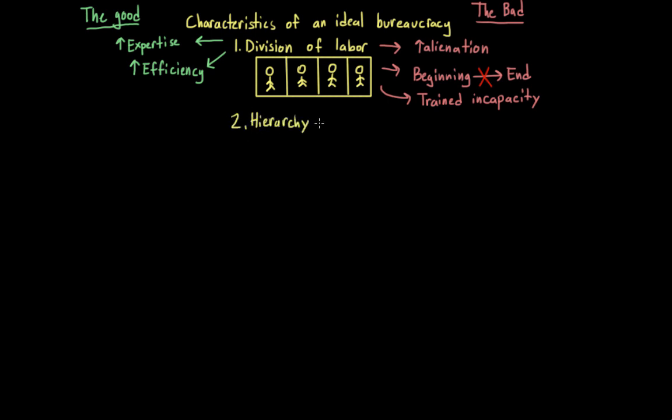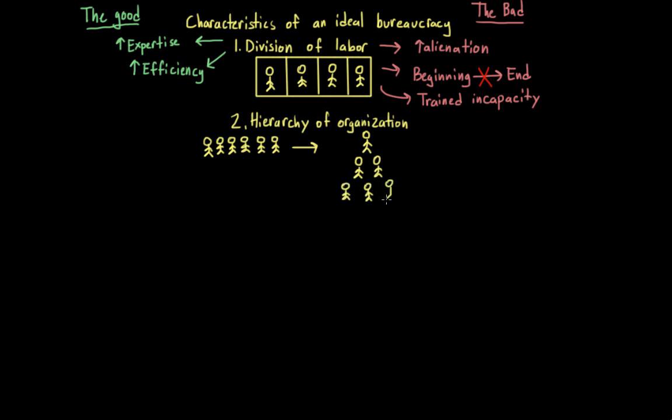The next characteristic of bureaucracy is a hierarchy of organization. Rather than all members of a bureaucracy being equal, each position is under the supervision of a higher authority. And this can be positive in that it can help to clarify who is in command. It can tell us who is in charge of what.